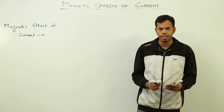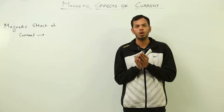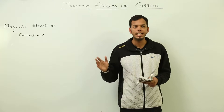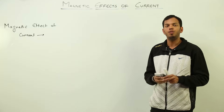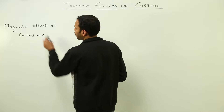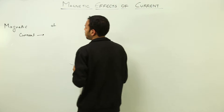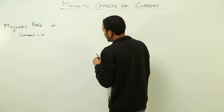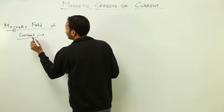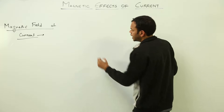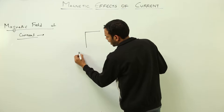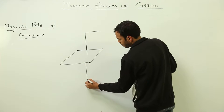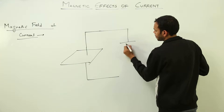So till now we have discussed the fact that magnetic effects of current do exist — when current is flowing through a conductor, a magnetic field is set up, due to which the magnetic needle's orientation changes, showing that magnetic field exists. Now we are going to discuss the magnetic field of current. To see this, a simplified experiment was done: we took a straight current-carrying wire and passed it through a wooden cardboard.